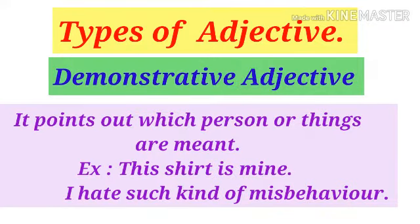The fifth one is known as demonstrative adjective. Demonstrative adjective points out something — we tell something straightforwardly about a person or thing. Examples include 'this' and 'such'. For example, 'This shirt is mine' — 'this' is the demonstrative adjective. Another example: 'I hate such kind of misbehavior' — 'such' points to something specifically, so it is the demonstrative adjective.